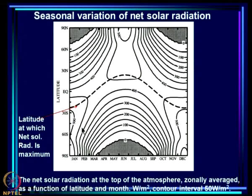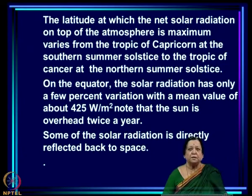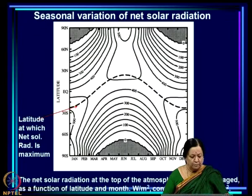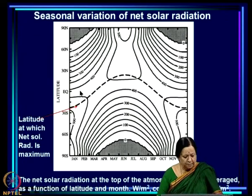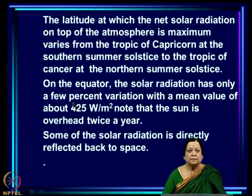This is the seasonal variation of radiation that drives atmospheric circulation. The latitude of maximum net solar radiation at the top of the atmosphere varies from the Tropic of Capricorn at the southern summer solstice to the Tropic of Cancer at the northern summer solstice. On the equator, solar radiation has only a few percent variation with a mean value of about 425 W/m², and the sun is overhead twice a year at the equator — so at the equator there is very little variation of solar radiation.